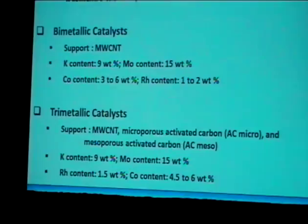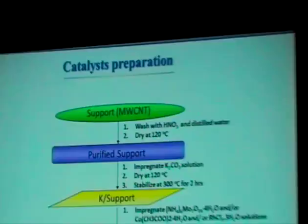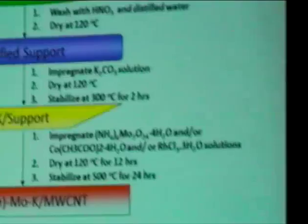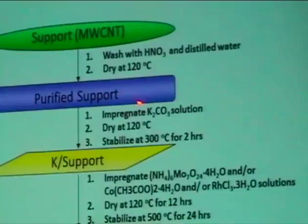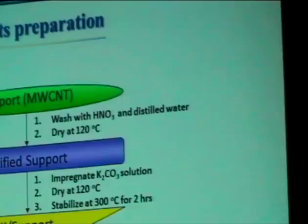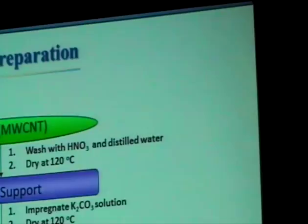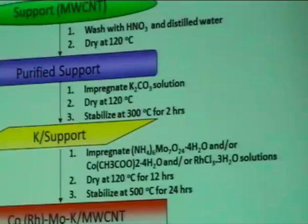Looking at catalyst preparation for mono-, bi-, and trimetallic catalysts: CNT was first treated with 30% dilute nitric acid at 110°C for 5–6 hours to create defects and hydroxyl sites. Then potassium was impregnated using potassium carbonate. After stabilization, ammonium heptamolybdate was impregnated, along with cobalt acetate tetrahydrate and rhodium chloride as sources of molybdenum, cobalt, and rhodium, loaded appropriately for mono-, bi-, or trimetallic materials.